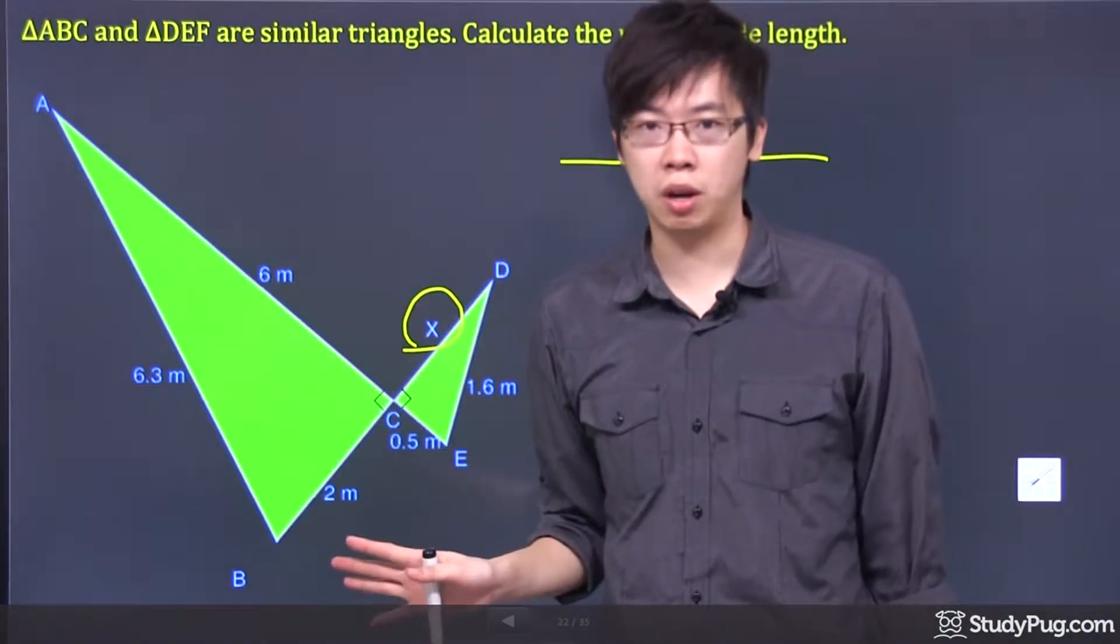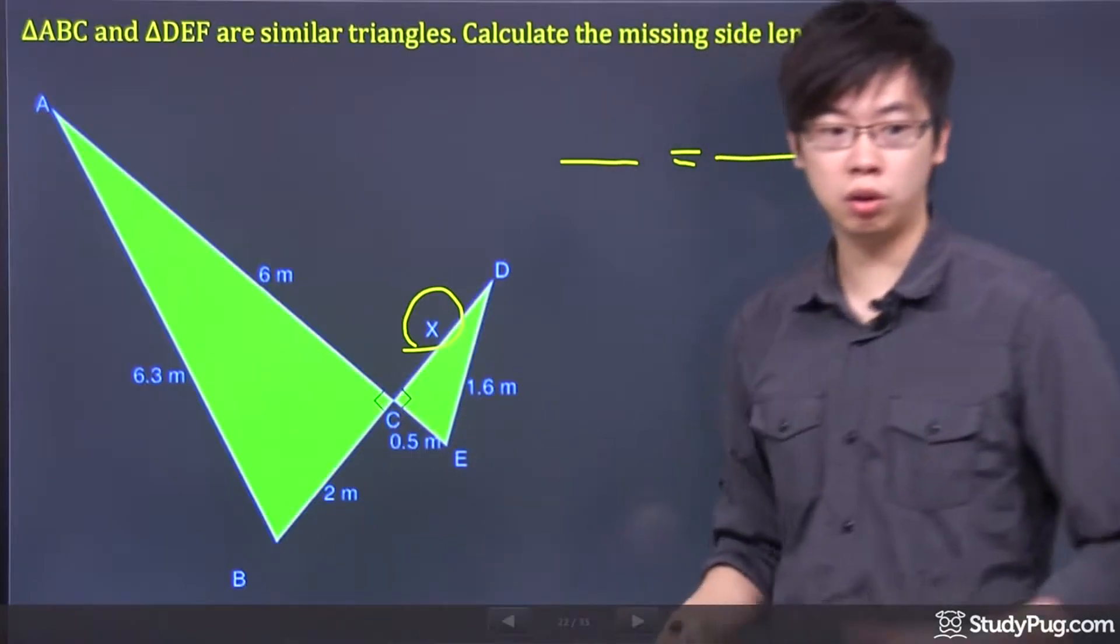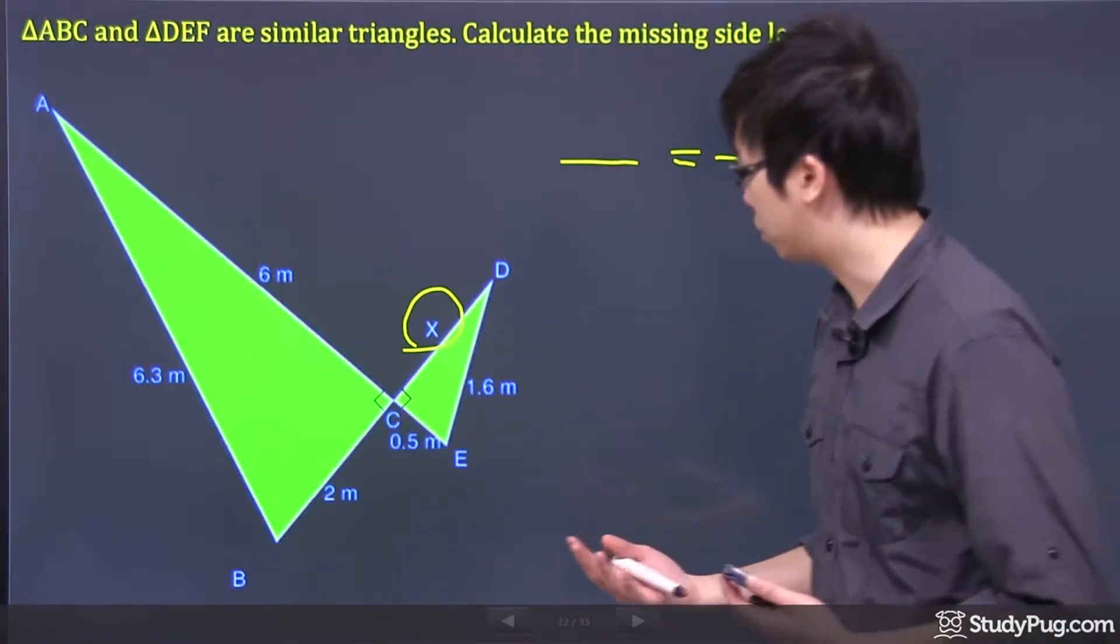You know that these two are similar triangles. The shorter side with the shorter side, there is a ratio that's involved between these two.